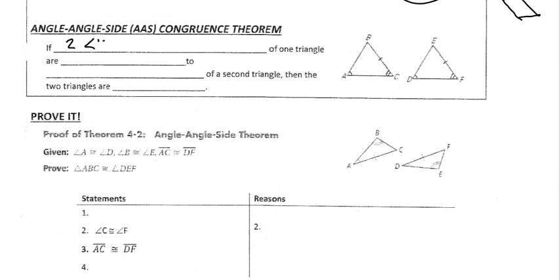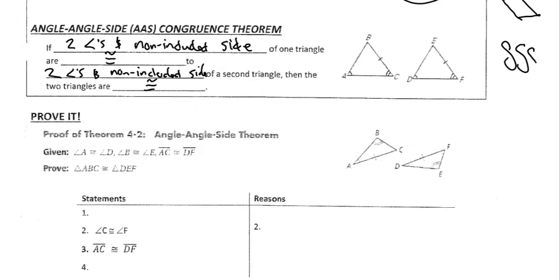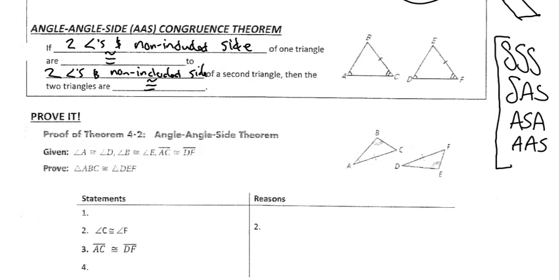If two angles and the non-included side of one triangle are congruent to two angles and the non-included side of a second triangle, then the triangles have to be congruent. So a little recap: rather than checking all sides and all angles, we have learned that SSS is enough, SAS is also enough, ASA is enough, and AAS is enough. We still don't know about SSA or AAA, but right now all of these shortcuts work.